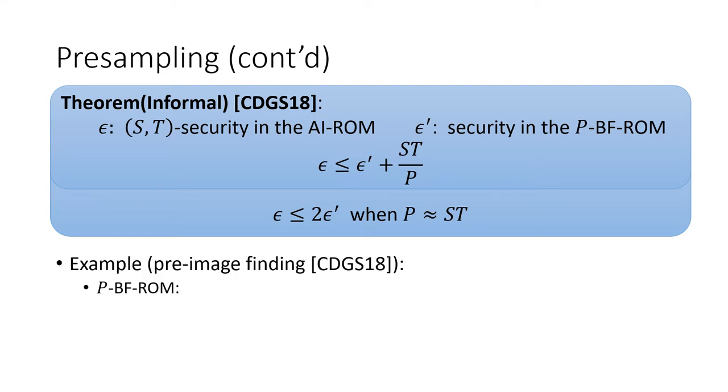Here we show an example that uses pre-sampling theorem to argue security in the AI-ROM. We consider pre-image finding. To prove the security epsilon in the AI-ROM, we only need to care about its security in the p-bit-fixing realm.